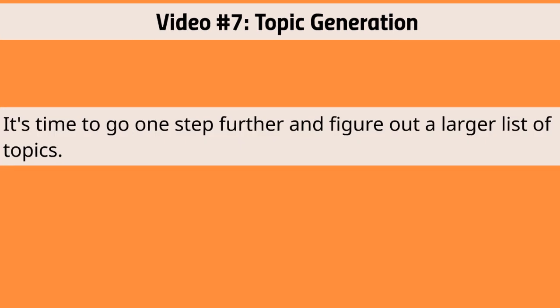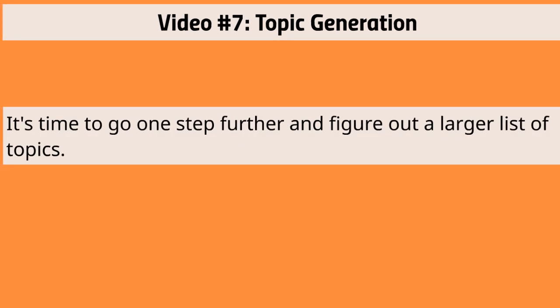It's time to go one step further and figure out a larger list of topics. We obviously have a list that we created earlier, but we want to make sure that we verify that they are truly in demand — that they are something people are actually asking for out on the internet. So how do you go about verifying this?